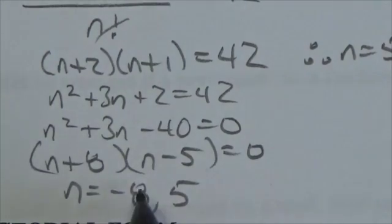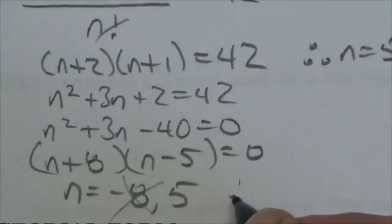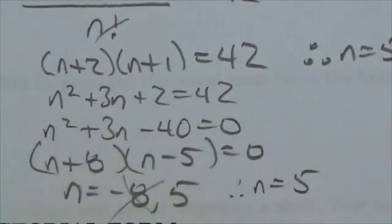But again, in this chapter, the negatives don't make much sense. So therefore, the answer is 5. Doesn't really matter how you play that one out. That's what you're going to get.